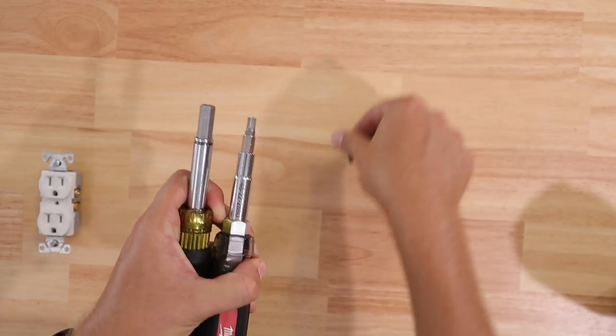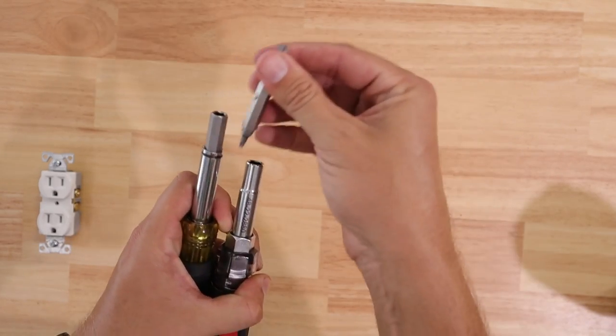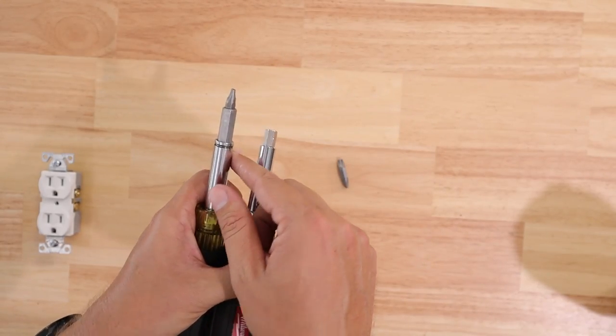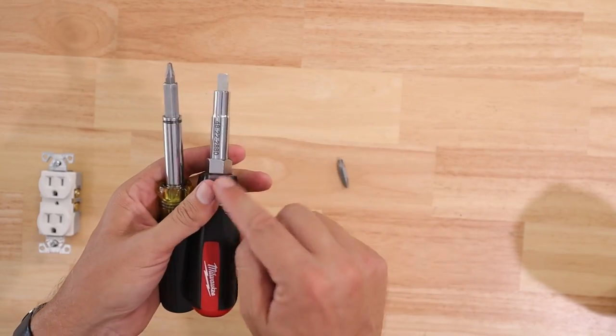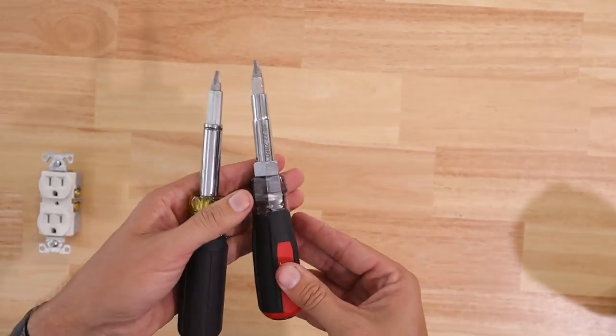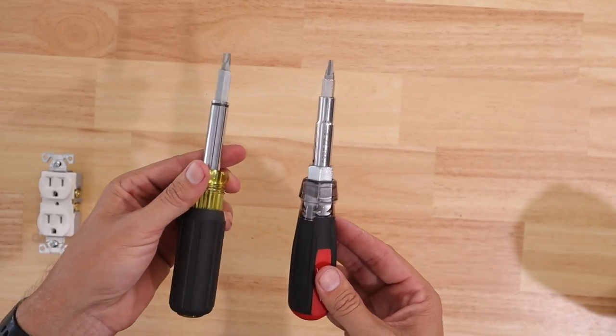I can take the Klein combination bit out of the Klein screwdriver and then take the Milwaukee ECX and it'll fit right into the Klein, no issue. Same thing with the Milwaukee. I can take the Klein combination bit and it'll fit right into the Milwaukee screwdriver as well. So that's nice also.